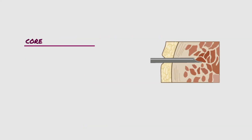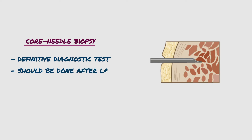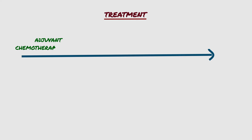Core needle biopsy with histological examination of tumor material is the definitive diagnostic test, which should be done after local staging has been completed using conventional radiographs, CT, and MRI. Treatment consists of adjuvant induction chemotherapy with MAP therapy, which consists of high-dose methotrexate, doxorubicin, and cisplatin.